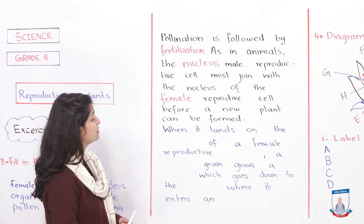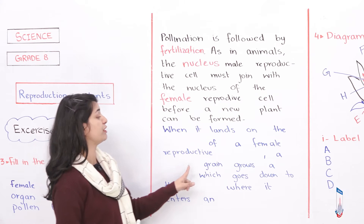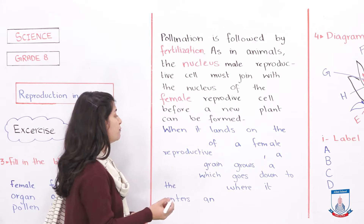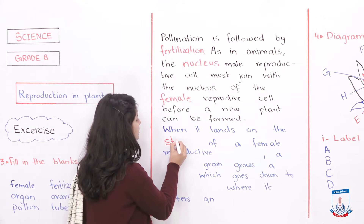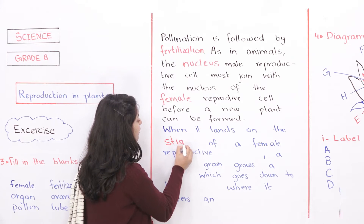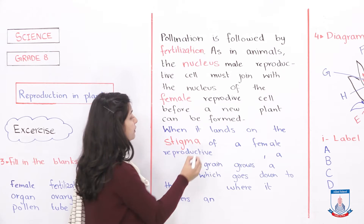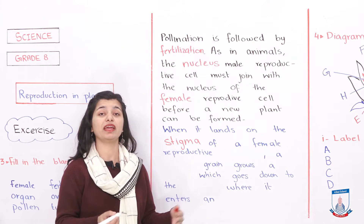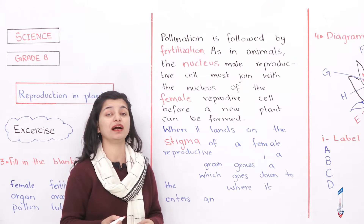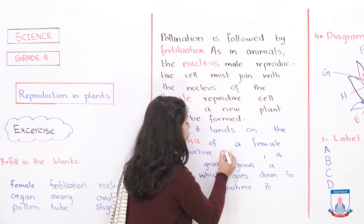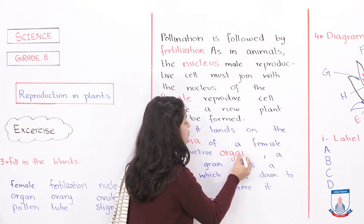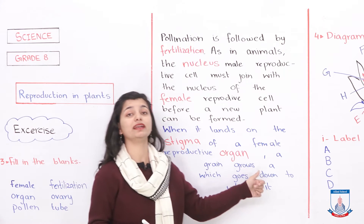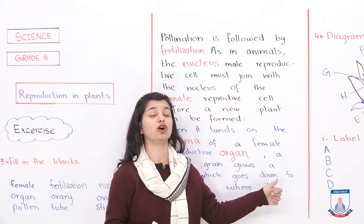When the pollen lands on the dash of a female reproductive dash — where does it land? In your options there is 'stigma'. Obviously pollen lands on the stigma. The whole stigma is the female reproductive organ, the part we call the carpel. So pollen lands on the stigma, which is the female reproductive organ called carpel.